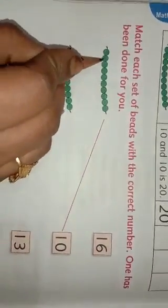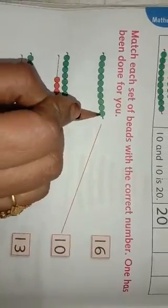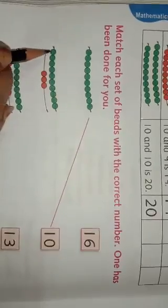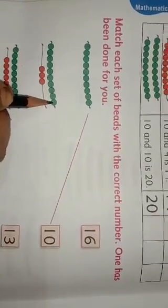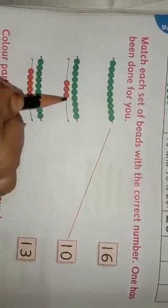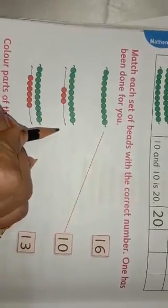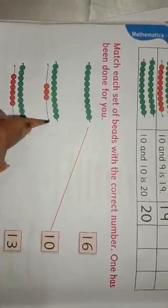1, 2, 3, 4, 5, 6, 7, 8, 9, 10 beads. So we match the number 10. Then 1, 2, 3, 4, 5, 6, 7, 8, 9, 10, and 1, 2, 3. Means 10 and 3 is equal to 13. 1, 3, 13. So we match the 13 number.